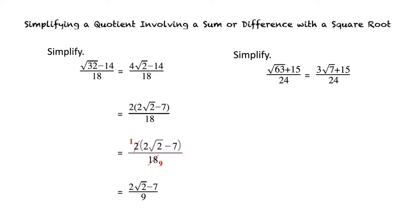We can then factor out the numerator and take a 3, which gives us 3 times square root of 7 plus 5 over 24. After that, we can cancel the common factor of 3, which gives us the final result of square root of 7 plus 5 over 8.